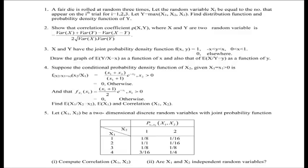Question 4: the conditional PDF of X2 given X1=x1 is given, X2 is positive and 0 otherwise. The marginal of X1 is also given, where X1 is positive — both variables take positive values. Find E[X1|X2=x2], E[X1], and the correlation between X1 and X2. You have all the tools needed.